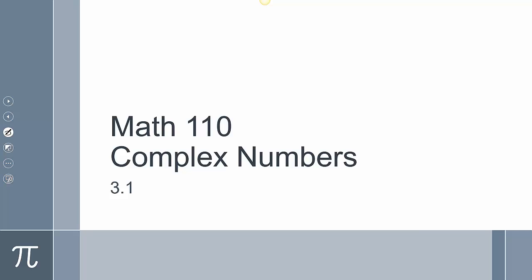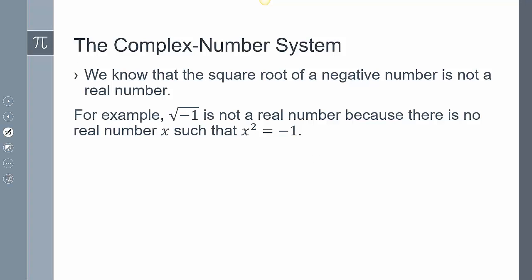This is Math 110, Section 3.1, Complex Numbers. The complex number system involves the square root of a negative number, and we classify that as not being a real number.